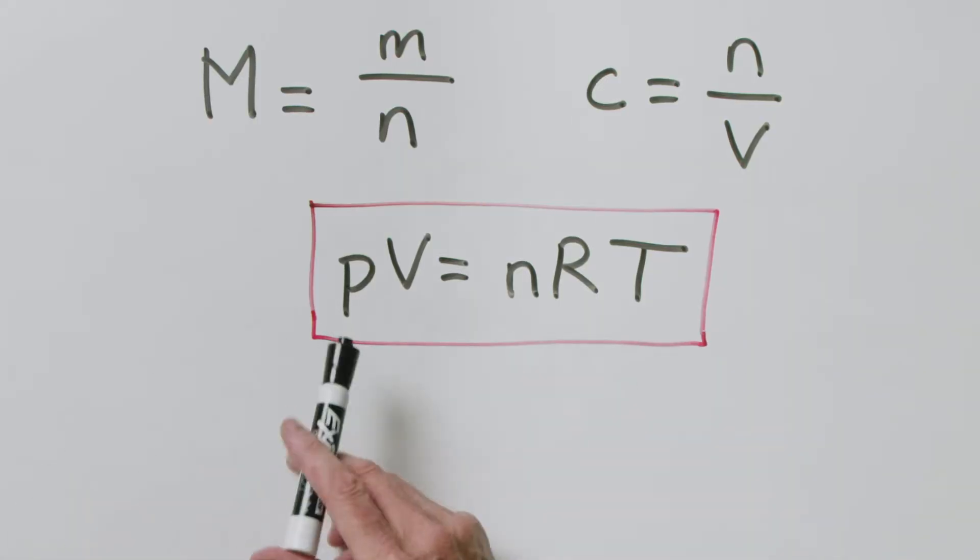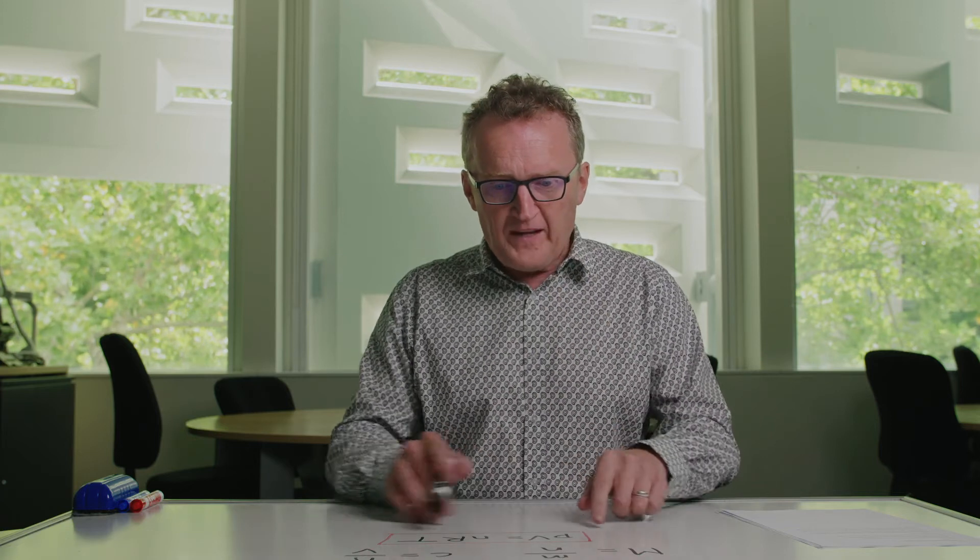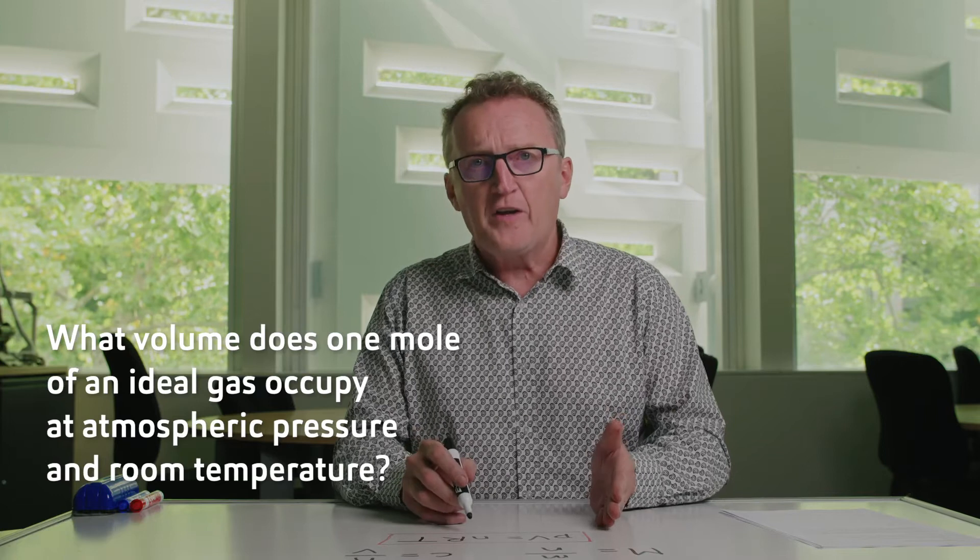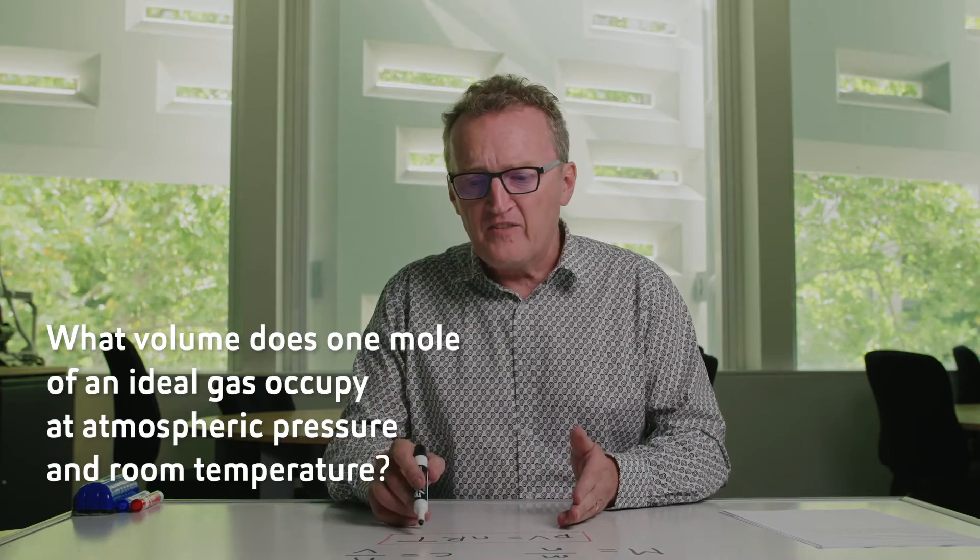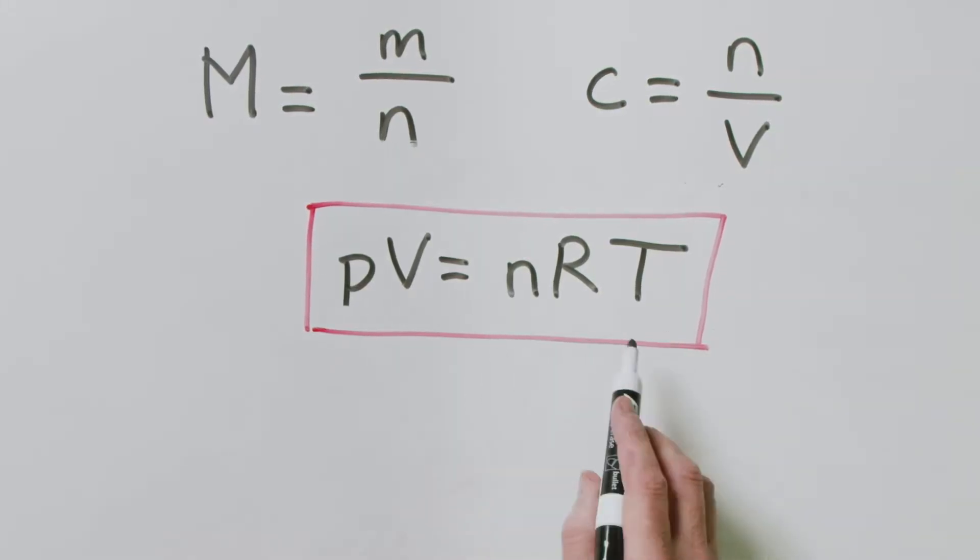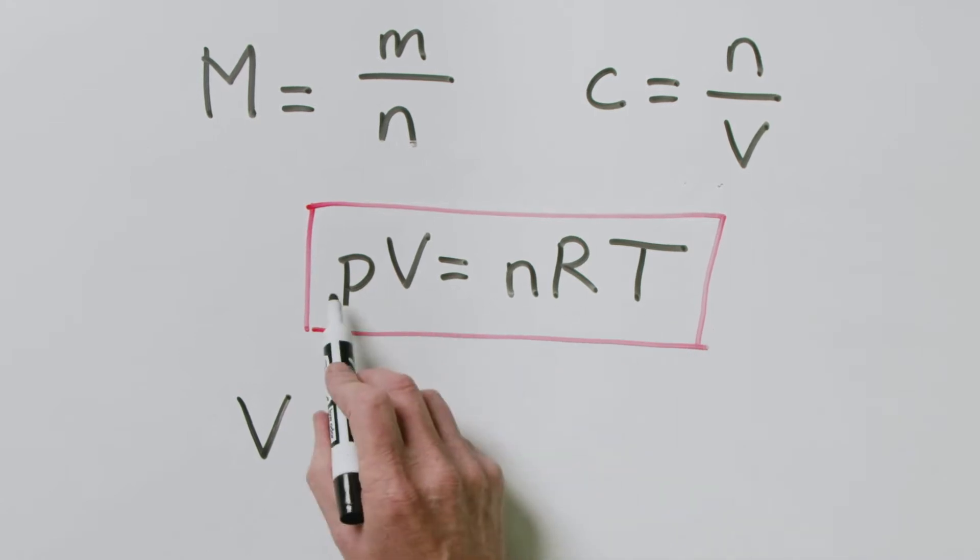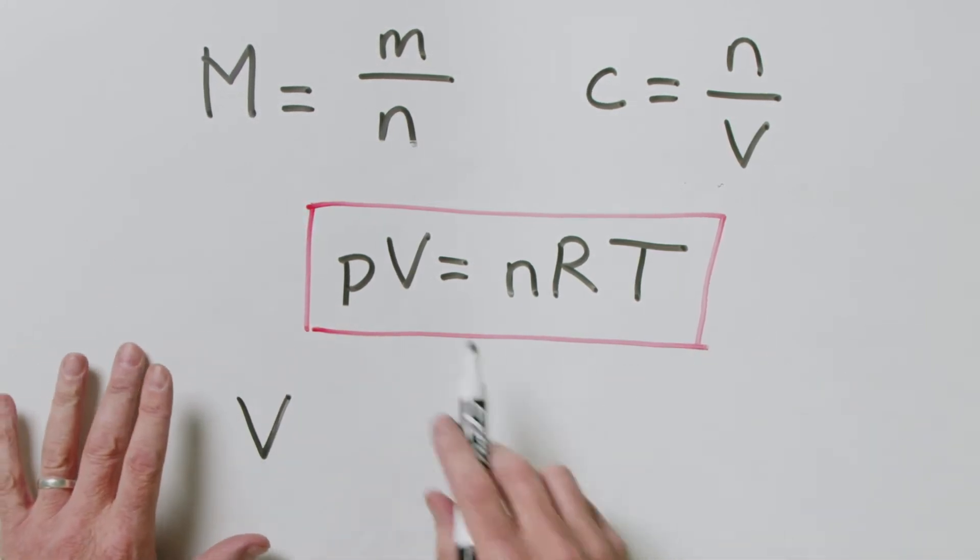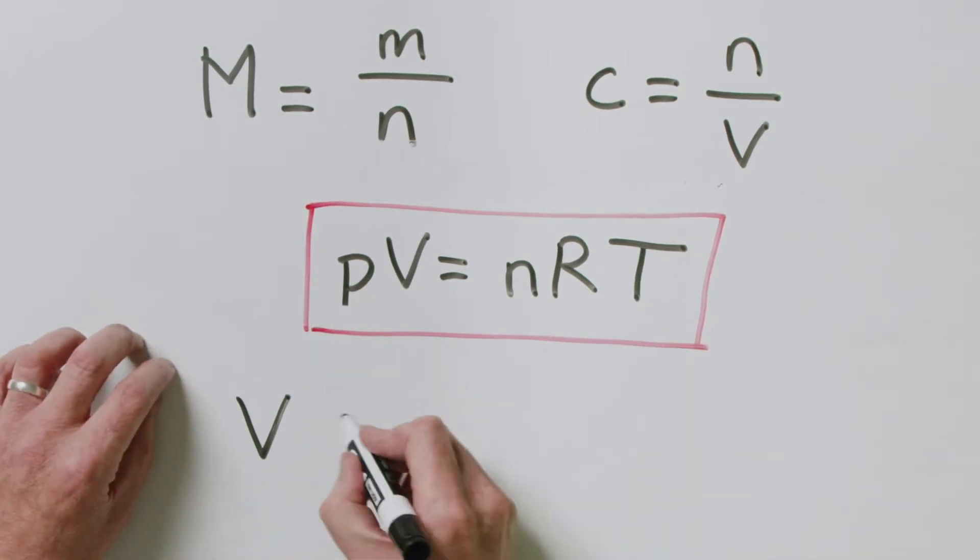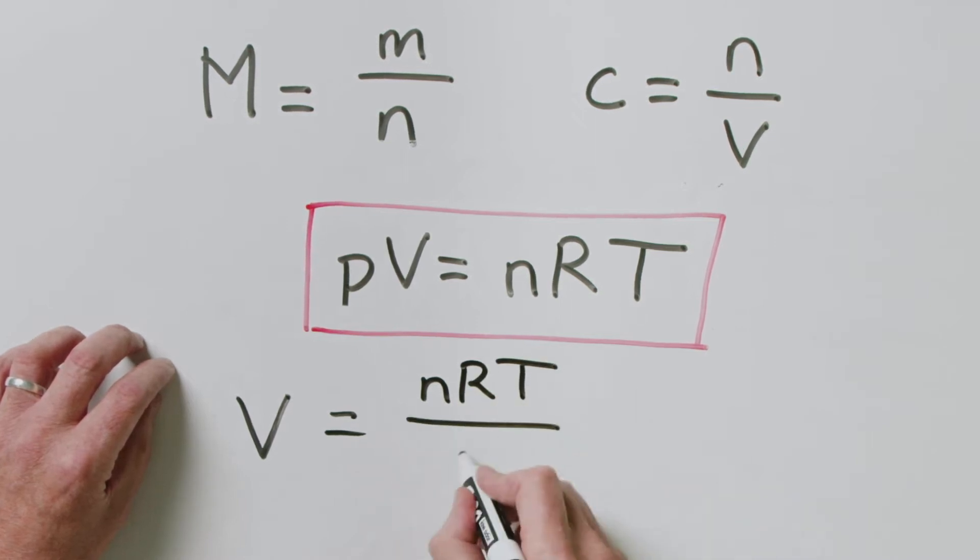Let's look at an example. What volume does one mole of an ideal gas occupy at atmospheric pressure and a temperature of 25 degrees? We want the volume that one mole of gas occupies under these conditions. We need to rearrange this equation. To make volume the subject, divide both sides by pressure, so V = nRT/P.